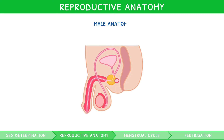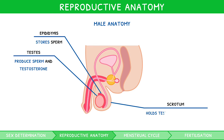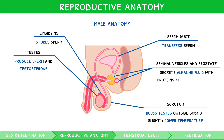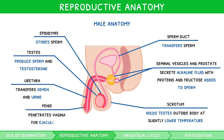Let's start with the anatomy of a male. The testes are egg-shaped structures that produce sperm and testosterone. The epididymis is a structure located atop each testes, which stores sperm. The scrotum is a sac that holds the testes outside the body, at a temperature slightly lower than core body temperature. The sperm duct is a tube which transfers sperm. The seminal vesicle and prostate gland secrete an alkaline fluid containing proteins and fructose, which are added to sperm to make semen. The urethra is a tube that transfers semen and urine. The penis is a muscular structure that penetrates the vagina for ejaculation near the cervix.